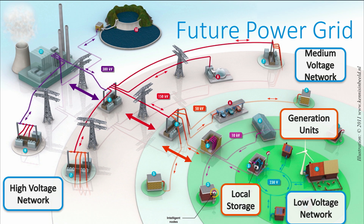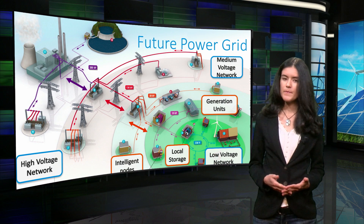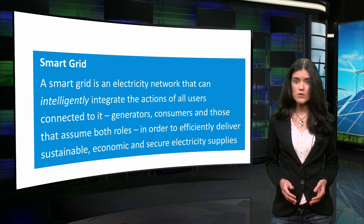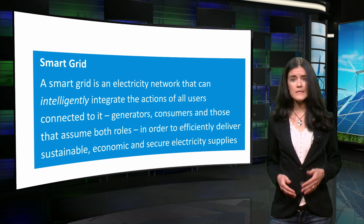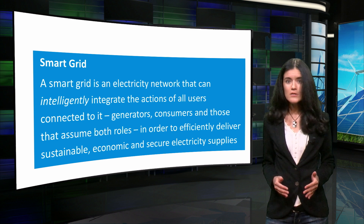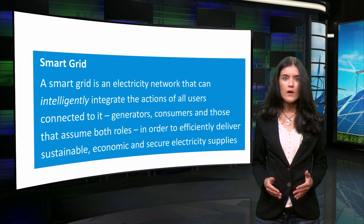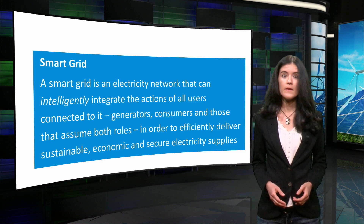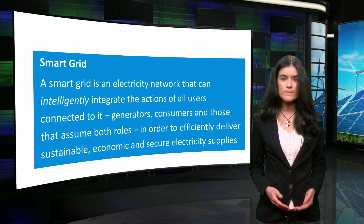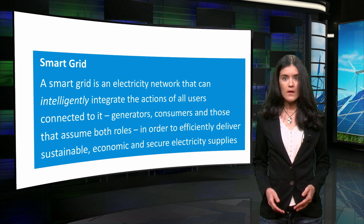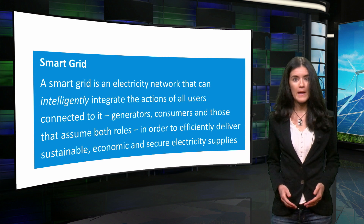You might have also noticed the presence of large consumers, such as electric vehicles, and also the presence of intelligent nodes, or in other words, nodes in which smart grid concepts will be enabled. A smart grid is an electricity network that can intelligently integrate the actions of all users connected to it, in order to efficiently deliver sustainable, economic and secure electricity supplies. The users can be generators, consumers, and those that assume both roles. The word intelligently means that the power system employs monitoring, control and communication, and also self-healing technologies to enable a power balance between generation and consumption.